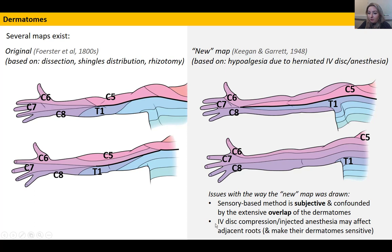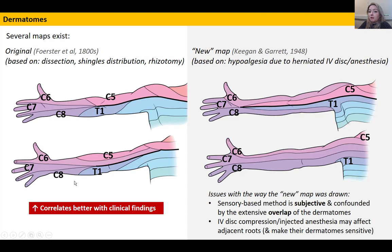Another potential confounder is that when looking at people with herniated intervertebral discs, dermatomes above and below can become hypersensitive. With injected anaesthesia, any leakage into adjacent roots can also affect the adjacent dermatome. As I said, there's still quite a lot of controversy, and many people consider the Forster map more aligned with clinical findings, but there's no real consensus as yet.